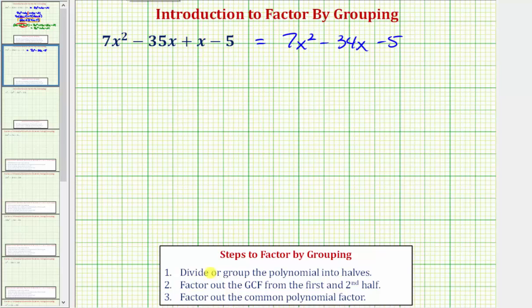So step one is going to be to divide or group the polynomial into two halves. Again, this is why we have to have an even number of terms. The first half would be the first two terms. The second half would be the second two terms.